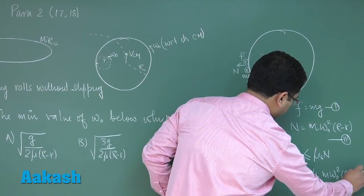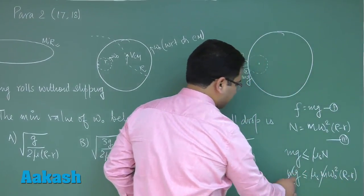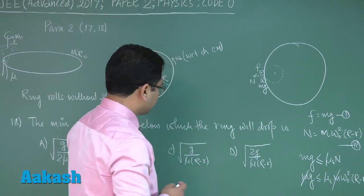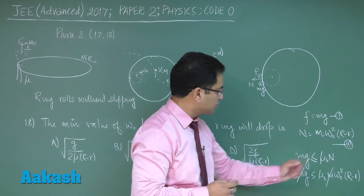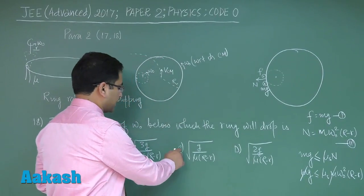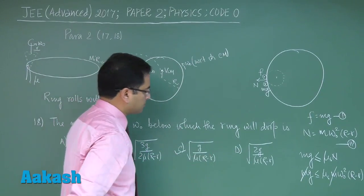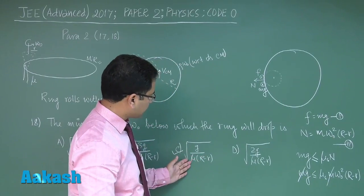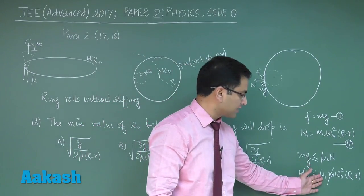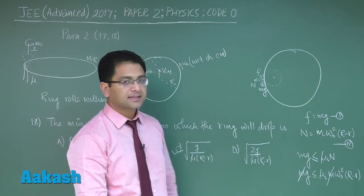This m and this m would get cancelled and the minimum value of omega naught would be under root g by mu s (r minus r), which is matching with option number C. Here the coefficient of the limiting friction has been denoted by mu, here it's denoted by mu s - that's all the same thing.